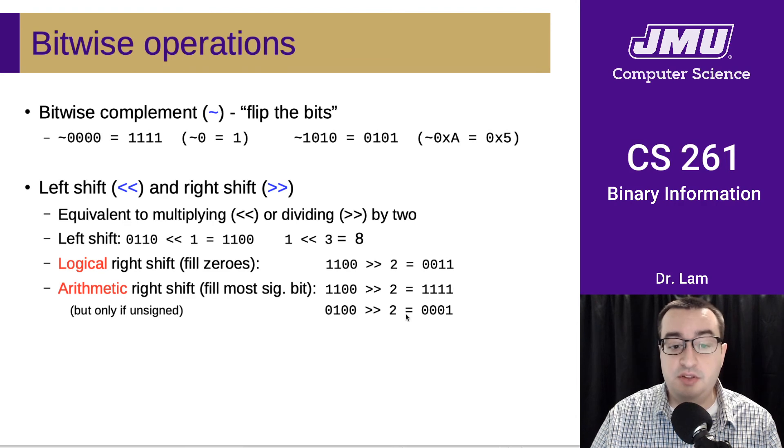If the first bit is zero, we'll fill with zeros. If the first bit is one, we'll fill with ones. The reason for this will become more apparent once we study integer encodings.